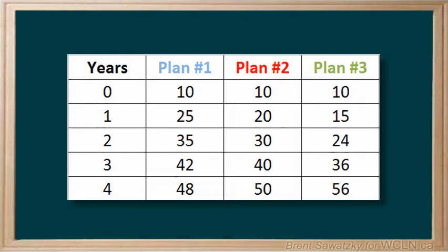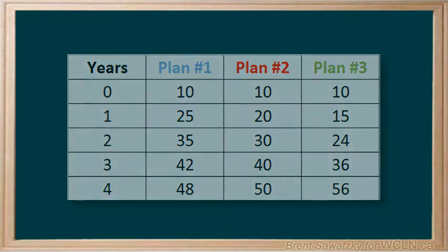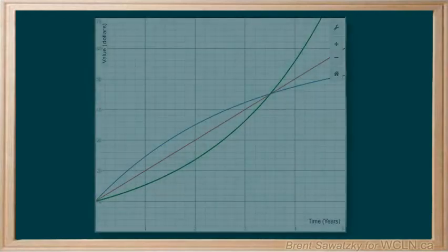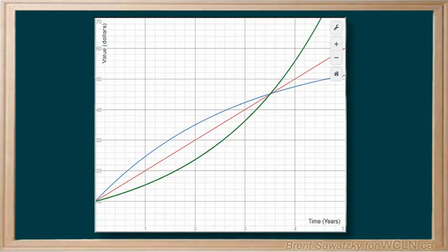It looks like plan one, but not for sure. The tables provide really useful data for comparing after one year or two years, or any particular number of years, but it's really difficult to get an overall picture of the growth. What about showing the values this way, in graph form?